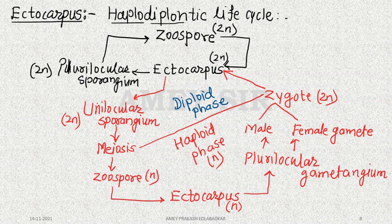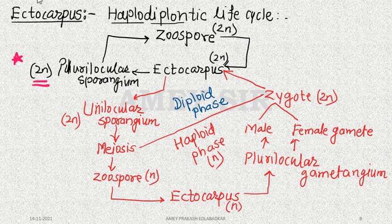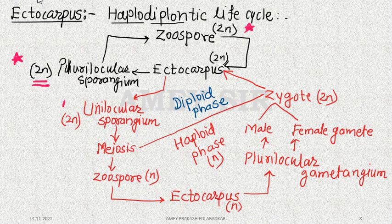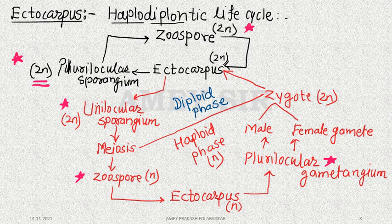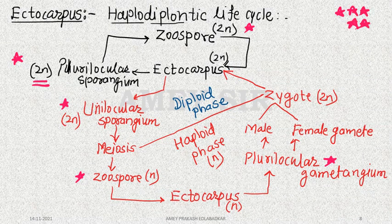Now important questions arise: What is the chromosomal status of plurilocular sporangia of Ectocarpus? What type of spores does it produce and what is their ploidy? Then, what is the chromosomal status of unilocular sporangia, and what structure produces male and female gametes? Four to five questions are formed on this topic. This is one of the most important slides of this video.